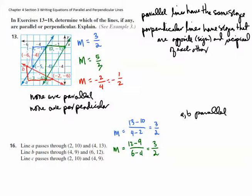For line C, M equals (9 minus 10) over (4 minus 2), giving a slope of negative 1/2. From this, only lines A and B are parallel, and no lines are perpendicular.